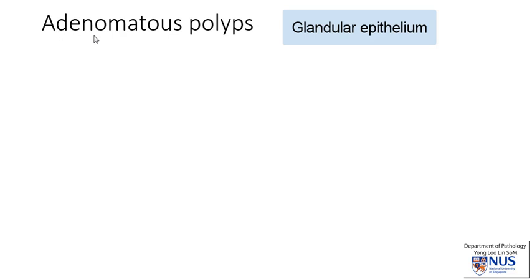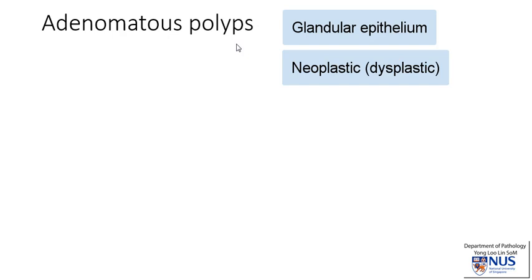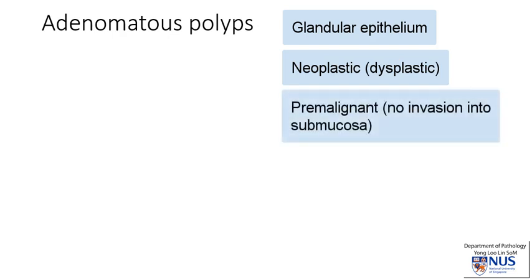Hello. In this short video, we're going to talk about adenomatous polyps of the gastrointestinal tract. They occur most frequently in the colon, but can also occur in the small bowel and in the stomach. These are made up of glandular epithelium, as you can tell from the name adenomatous, and they are neoplastic. On microscopy we see dysplastic mucosa, and they're considered pre-malignant. They can progress through an accumulation of genetic aberrations to carcinoma.